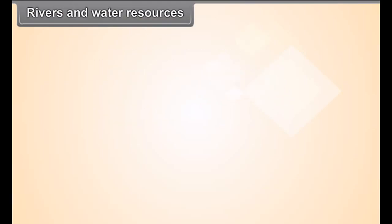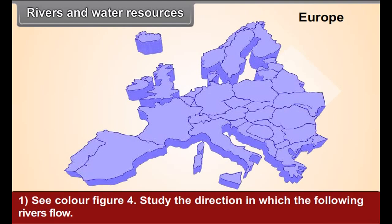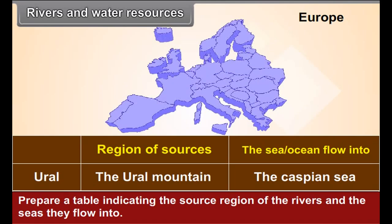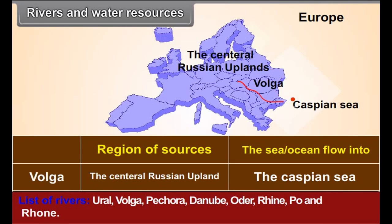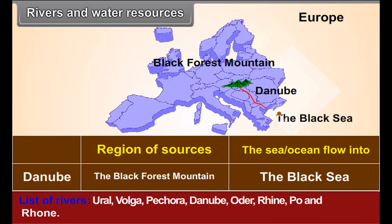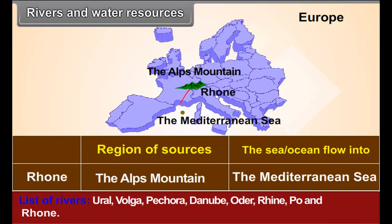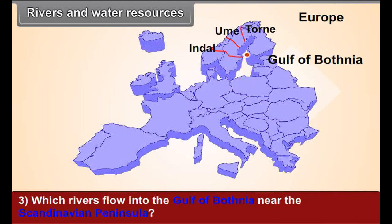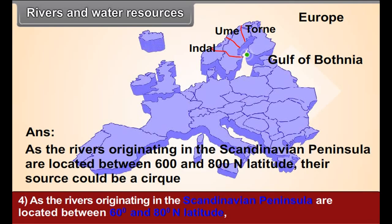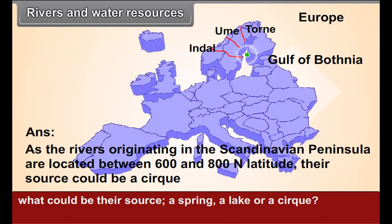Rivers and Water Resources. See color figure 4. Study the direction in which the following rivers flow and prepare a table indicating the source region of the rivers and the seas they flow into. List of rivers: Ural, Volga, Pecora, Danube, Oder, Rhine, Po and Rhone. Name any two rivers flowing through the North European plains. Which rivers flow into the Gulf of Bothnia near the Scandinavian peninsula? As the rivers originating in the Scandinavian peninsula are located between 60 degrees and 80 degrees north latitude, what could be their source?